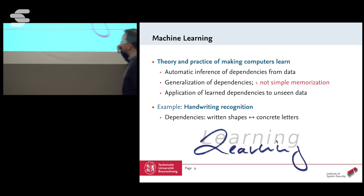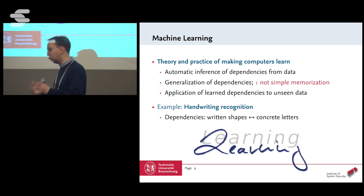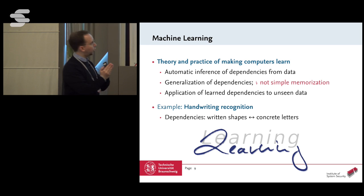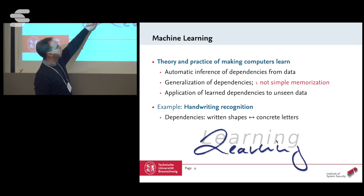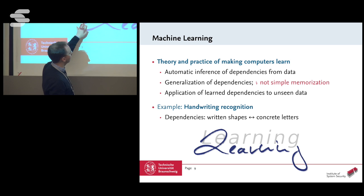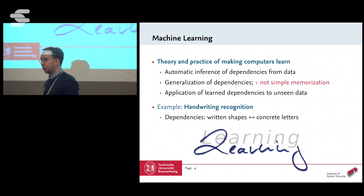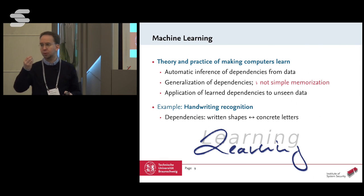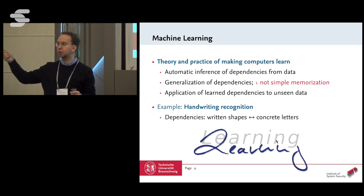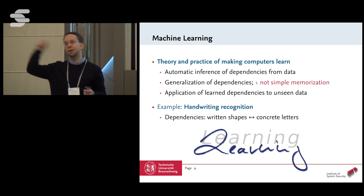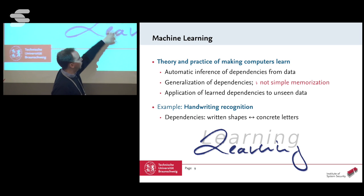Let's get an understanding of dependencies. Here I have handwritten text that says 'learning,' and behind it is printed text that also says 'learning.' We want a computer program to learn to recognize the letters. What we want is for the program to identify written shapes and associate them with the corresponding letters. My handwriting looks completely different from the printed version, but both should be recognized as L, E, A, R, N, I, N, G. This association between shape and letter is called a dependency.